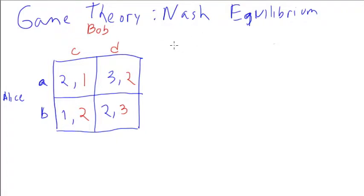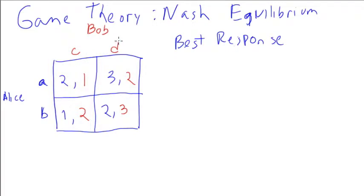To talk about Nash equilibrium, I first need to define best response. The best response for a player is what you might expect: the agent's best action given the other players' actions. For example, if Bob plays C, Alice's best response would be to play A, since she's looking at either 2 or 1, so she should play A.